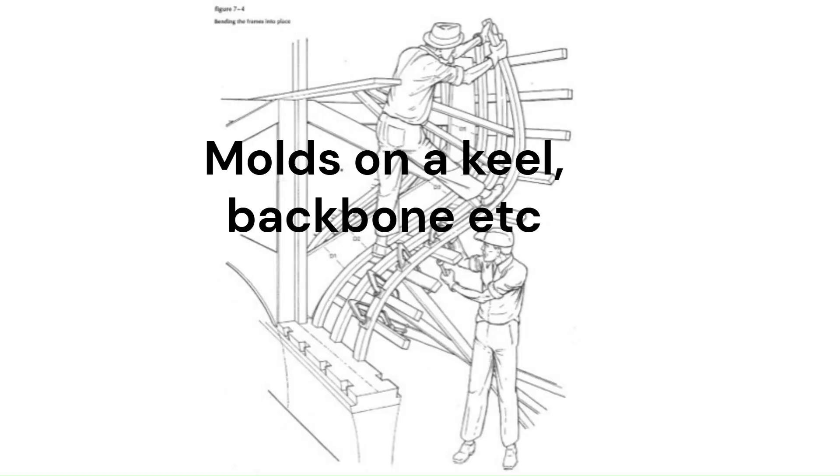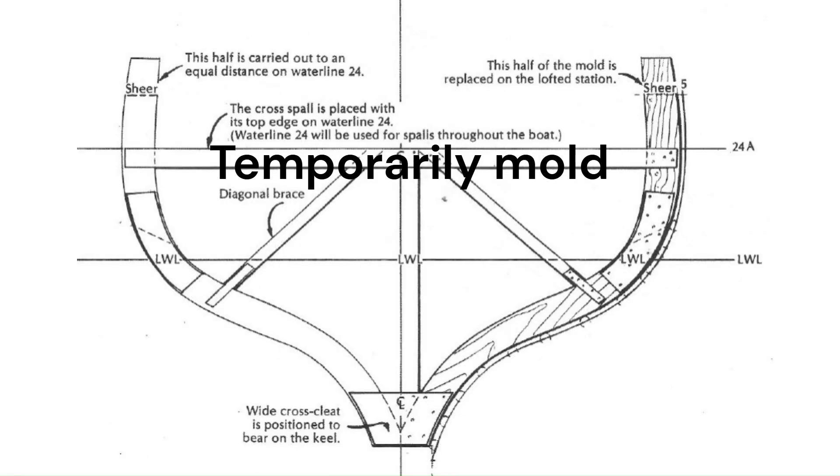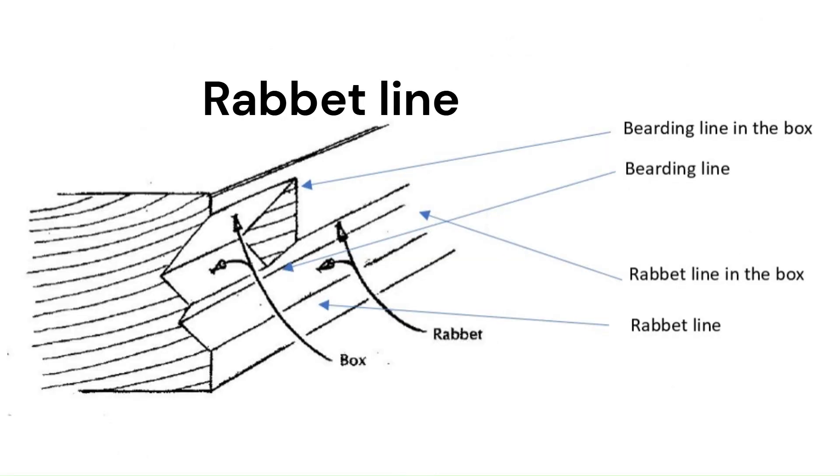Molds on a keel, backbone, etc., with steam-bended frames. With molds on a keel, you loft the wooden molds. These are temporal molds and will be removed in a later stage. The pictures shown here are examples from Bud McIntosh's book, How to Build a Wooden Boat. In this type of building, you have a so-called rabbet line. The rabbet line coordinates can be in the table of offsets or can be found in the construction drawing.